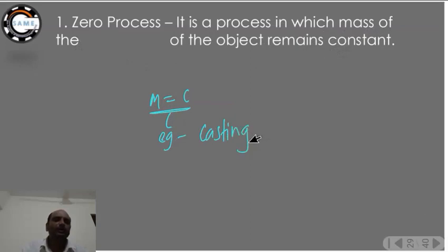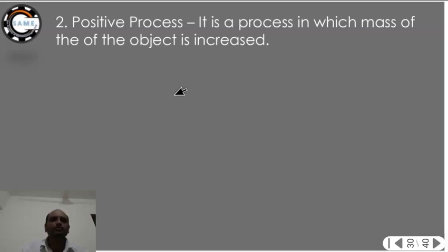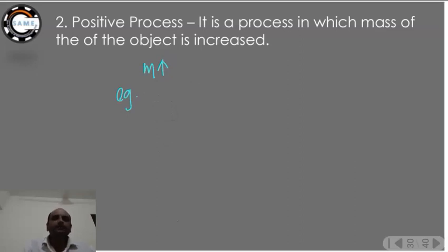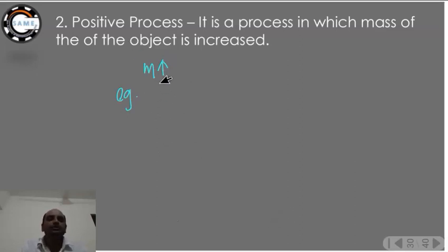In the positive process, the mass of the object increases. So depending on mass: if mass is constant it is a zero process, if mass is increasing it is a positive process, and if mass is decreasing it is a negative process. Examples of positive processes include welding and riveting.